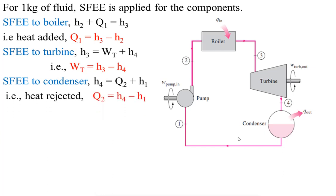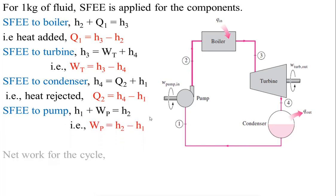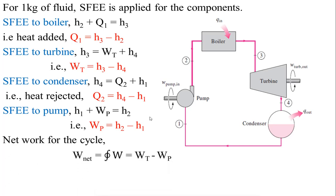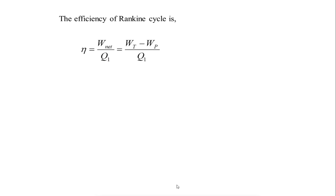Net work done from the cycle is positive work minus negative work — that is W_T minus W_P — which equals (h₃ − h₄) − (h₂ − h₁). The efficiency of the Rankine cycle is net work output divided by heat supplied: η = (W_T − W_P) / Q_in.